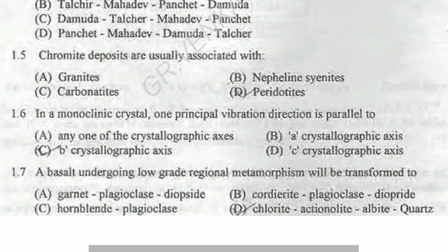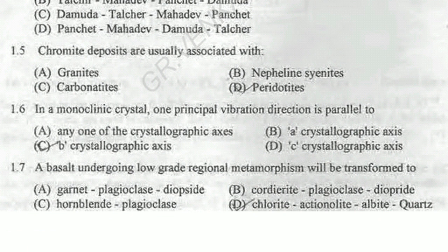Next question: chromite deposits are usually associated with granite, carbonatite, nepheline syenite, or peridotite? As we know, chromite is always associated with Fe-Mg rich rocks — that is, ultramafic rocks. Among these four options, the most appropriate answer is peridotite, since it has olivine structures and other different types of minerals. So chromite is associated with peridotite.